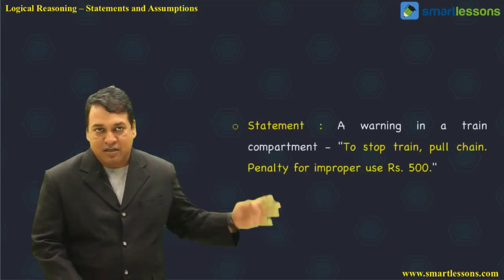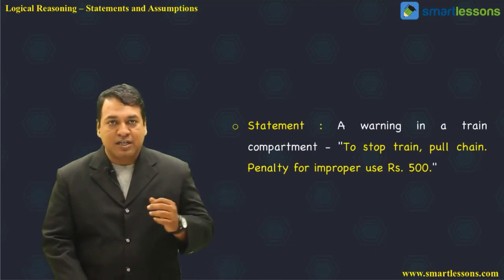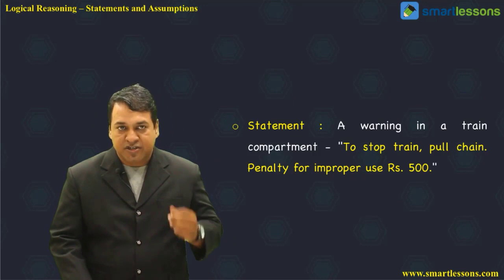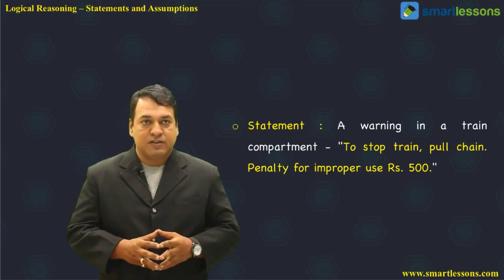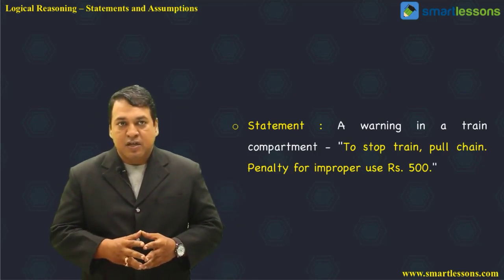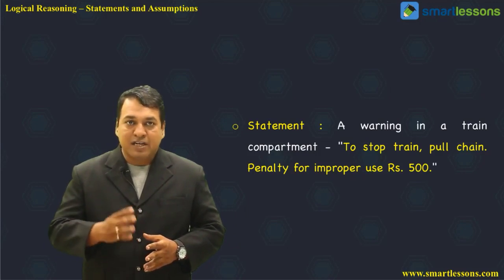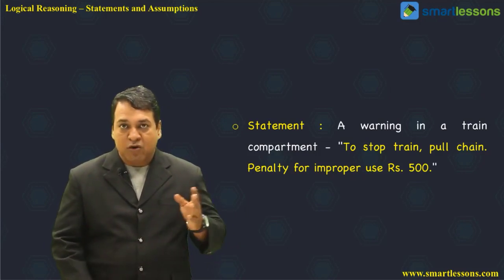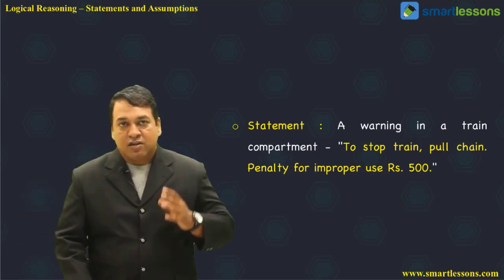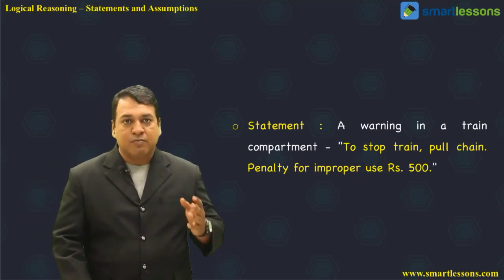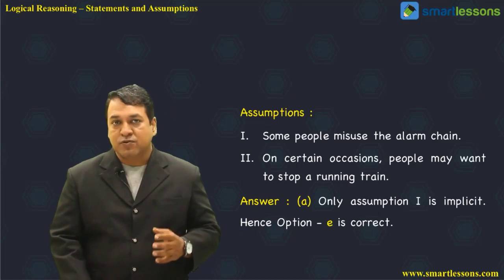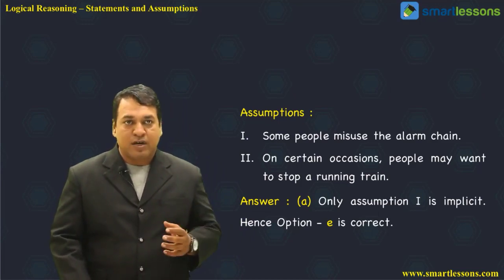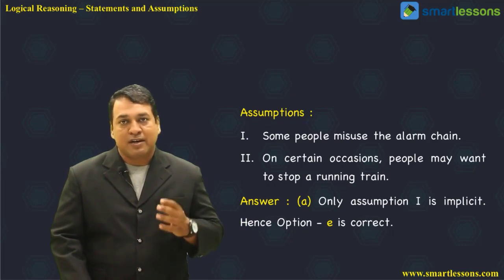The example is on the screen. A warning in a train compartment: 'To stop the train, pull the chain. Penalty for improper use is rupees 500.' That is the warning displayed inside the train — you can pull the chain to stop the train, but for improper use there is a penalty of 500 rupees. The assumptions are: one — some people misuse the alarm chain; two — on certain occasions people may want to stop a running train.